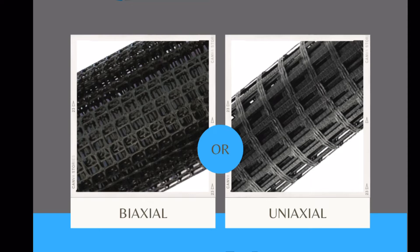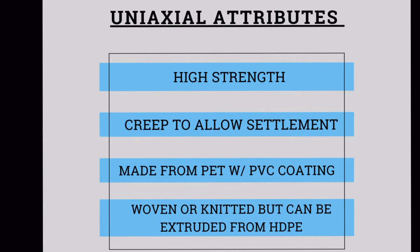The following are general attributes and uses for both types. Uniaxial attributes include high strength, some creep to allow settlement, they are generally made from polyester with PVC coating, and they are generally woven or knitted but can be extruded from HDPE.